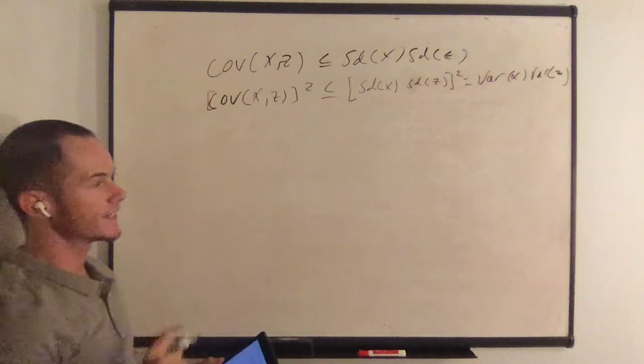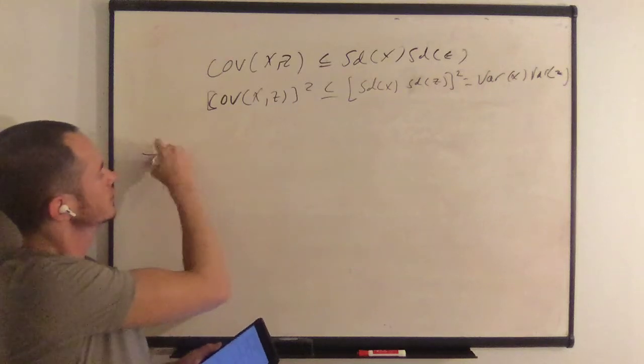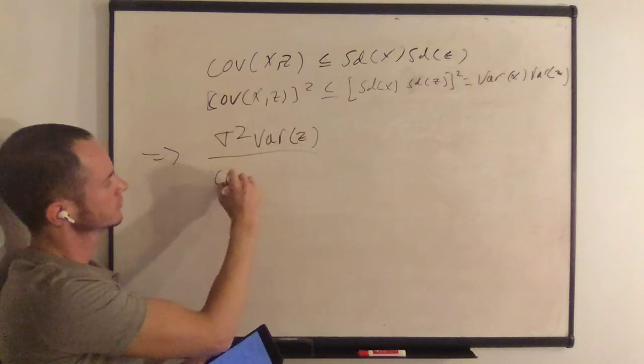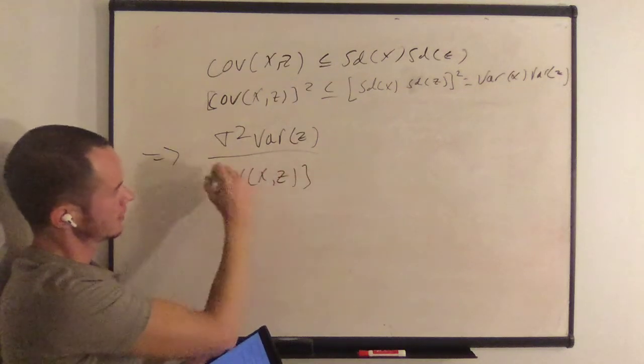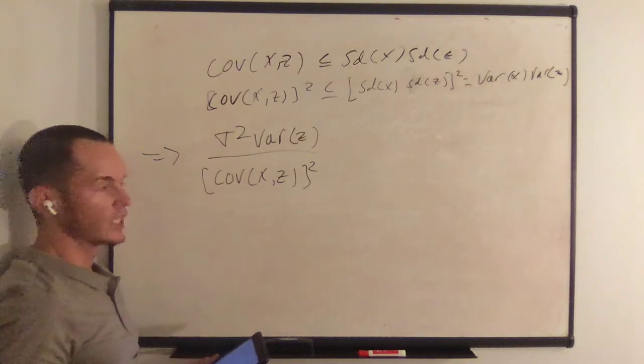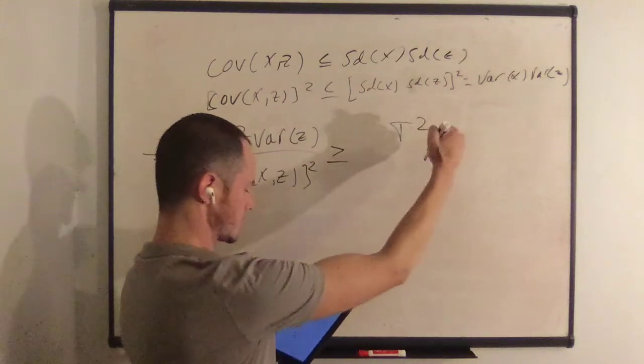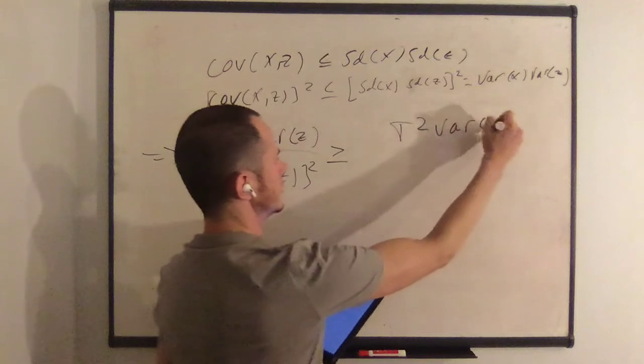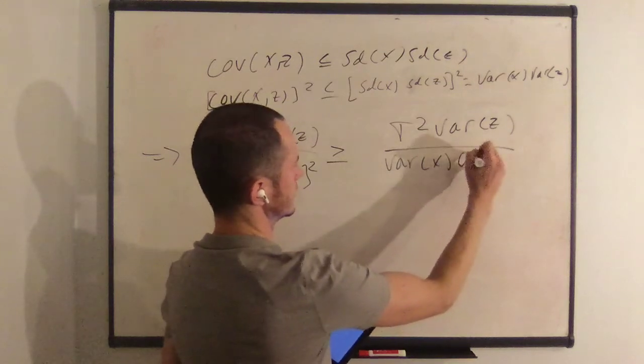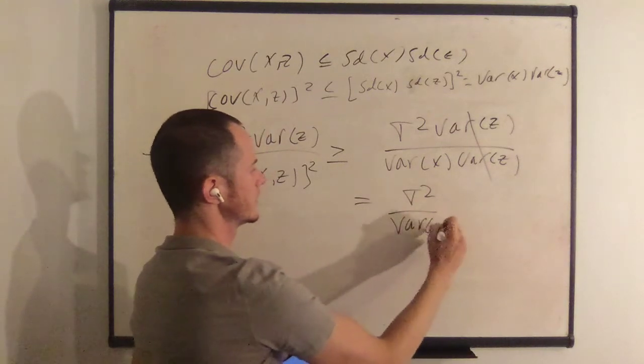Now we can take this inequality and substitute this into the asymptotic variances. So this implies that sigma squared variance of z over covariance xz squared, so this is the asymptotic variance for beta 1 tilde, this is greater than or equal to sigma squared variance of z all over variance of x variance of z. That cancels out. That's equal to sigma squared over variance of x.